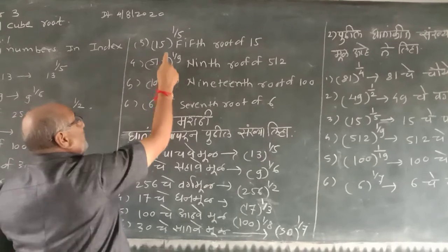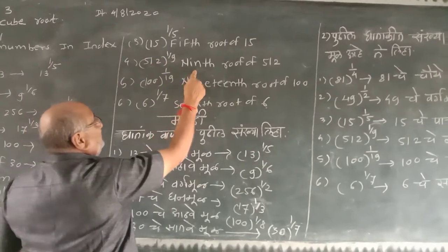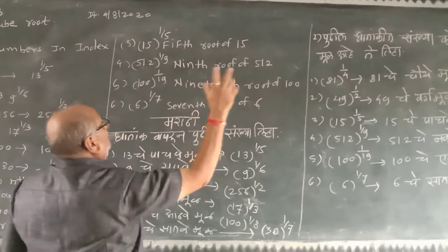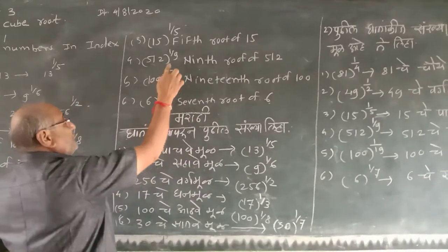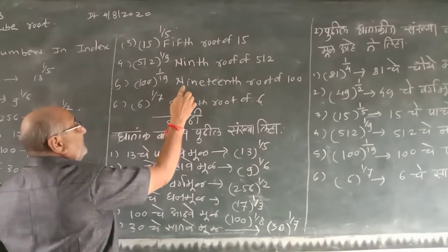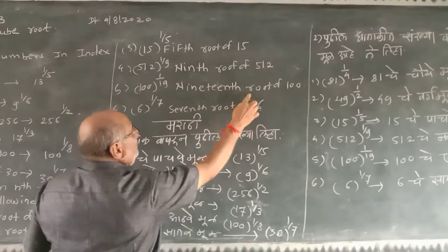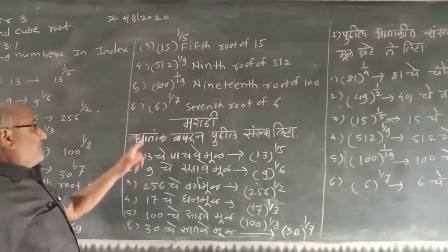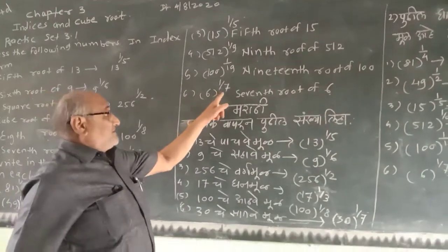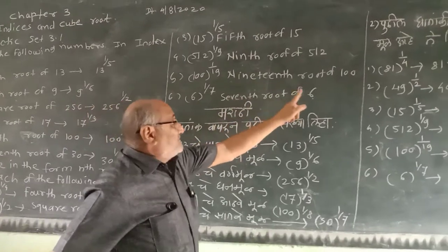512 raised to 1/9, ninth roots of 512. 100 raised to 1/9, ninth roots of 100. 6 raised to 1/7, seventh roots of 6.